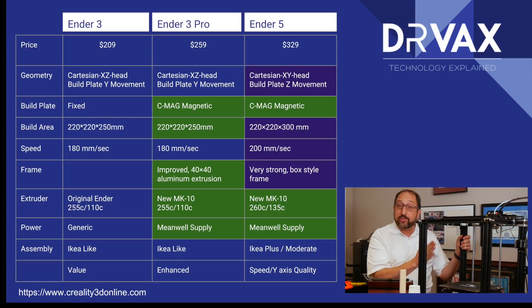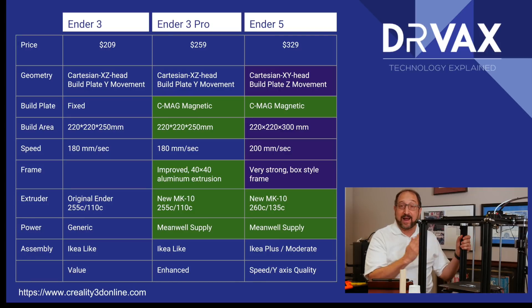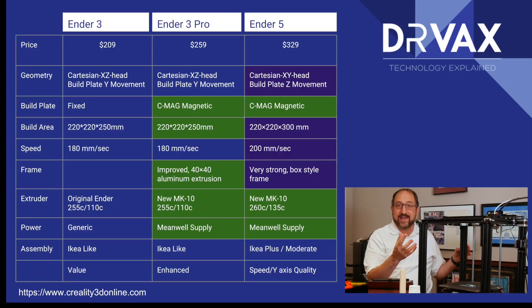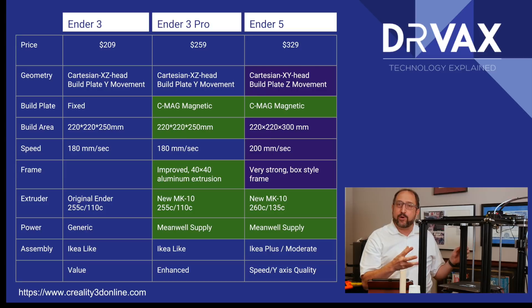The speed ratings on the Ender 5 are faster, which partially has to do with the fact that you're not moving the print bed as often. It has a slightly upgraded, stiffer frame. The difference between the 3 and the 3 Pro is the 3 has the least stiff frame; the 3 Pro is stiffer but still in an i3 configuration. The 5 has a full box frame — a solid, solid frame — so when you crank up the speed you'll get less vibration and therefore can theoretically print faster with fewer artifacts.